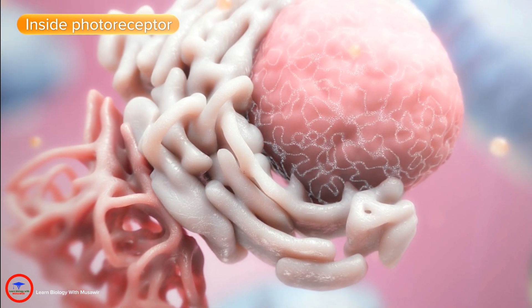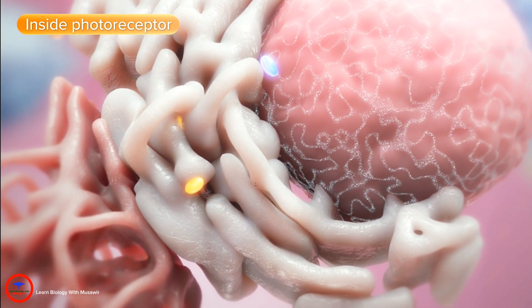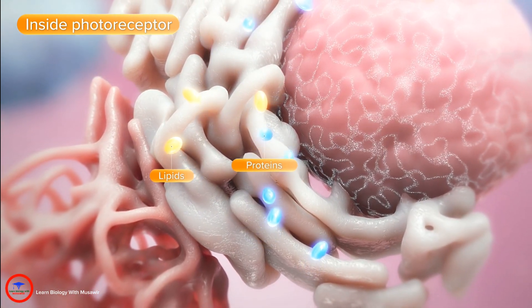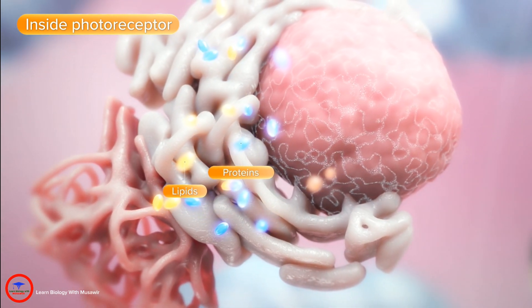Photoreceptors are also under endoplasmic reticulum or ER stress. The ER directs lipid manufacture as well as protein production and folding required for outer segment renewal and for neurotrophic factor secretion.